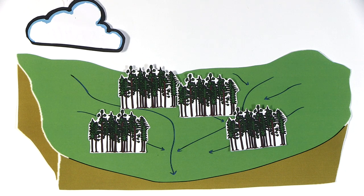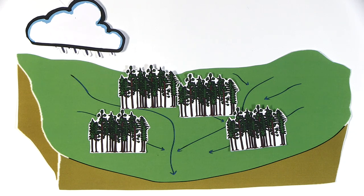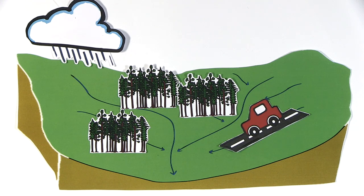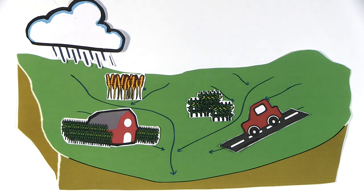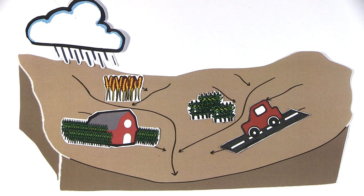The fraction of precipitation that becomes groundwater is determined by soil characteristics and surface vegetation. Changes in vegetation cover and modifications in the landscape can impact the amount of water infiltrating into the aquifer. When soil is eroded, rainwater runoff increases, which reduces the rate at which precipitation infiltrates and recharges groundwater in aquifers.